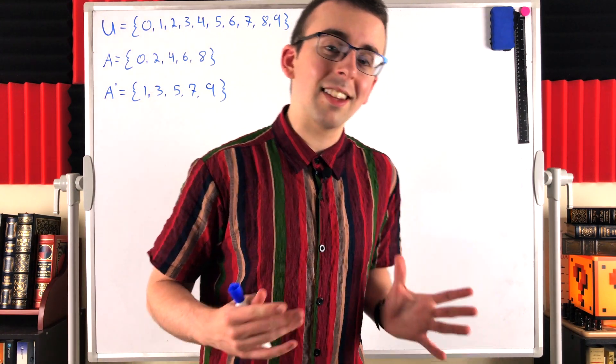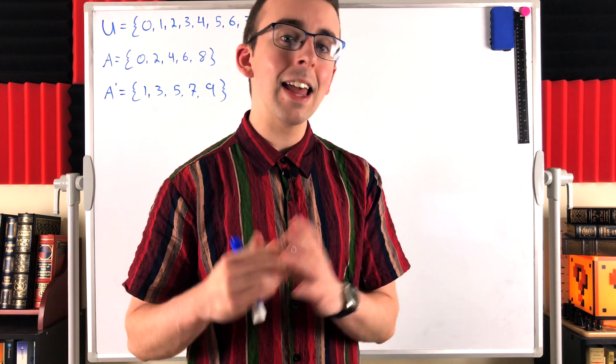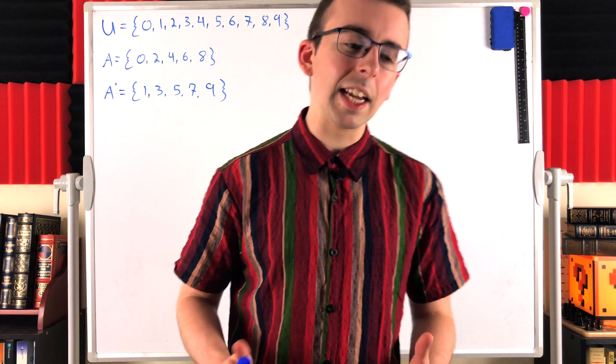The short answer is: let A be a set, then the complement of the complement of A is the set A itself, and it's basically the same idea as double negatives.